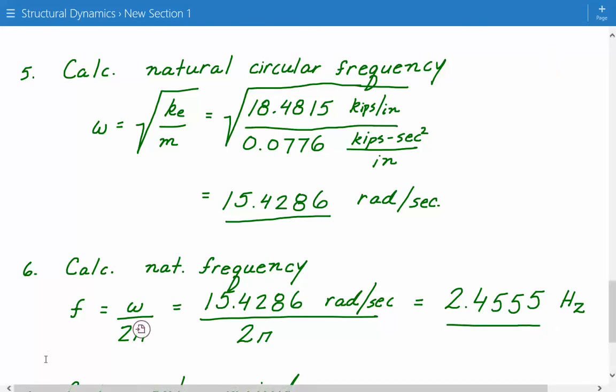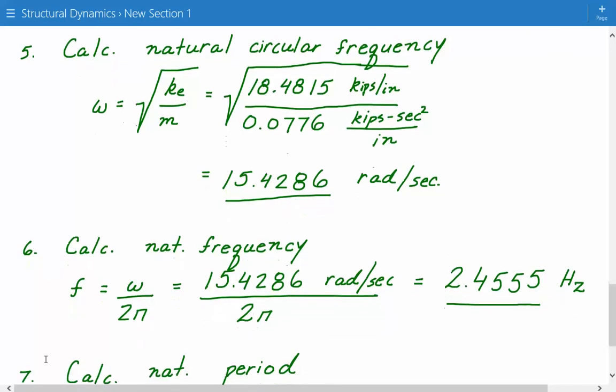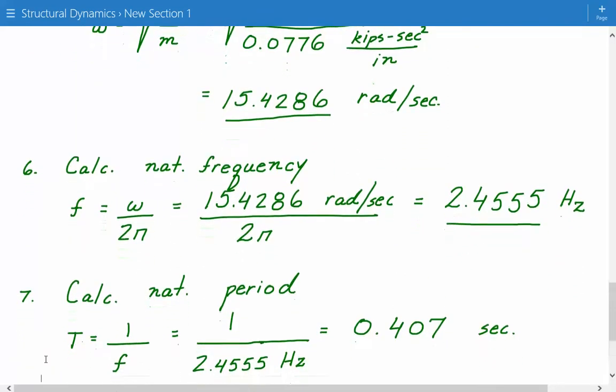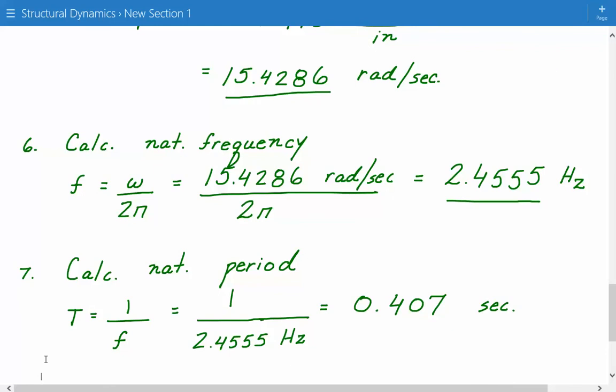And finally, we'll calculate the natural period, which is the inverse of the natural frequency. So T period equals 1 divided by the natural frequency. So 1 divided by 2.4555 hertz. And this gives us a natural period of 0.407 seconds.